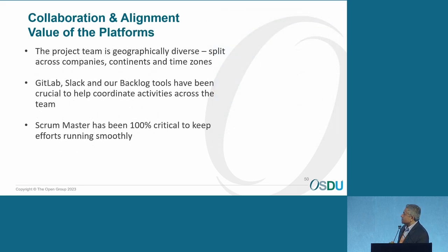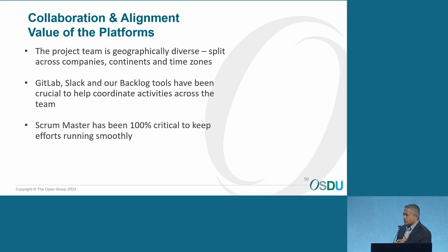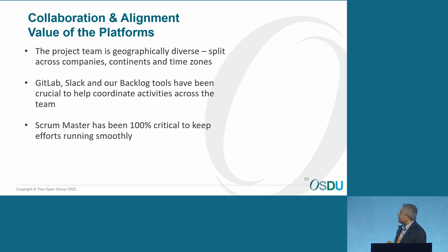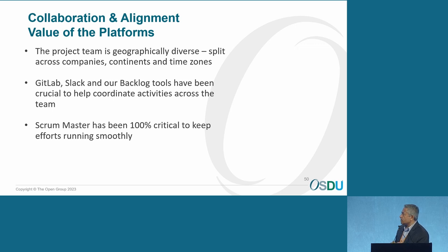Our project team is geographically diverse, like many other project teams — split across companies, continents, and time zones. The tools the OSDU forum provides have been really helpful: GitLab, Slack, and the backlog tools we use. Without them, we would not be able to be productive and efficient. And again, back to the Scrum Master — that critical individual who keeps efforts going and keeps the lights on for the project.